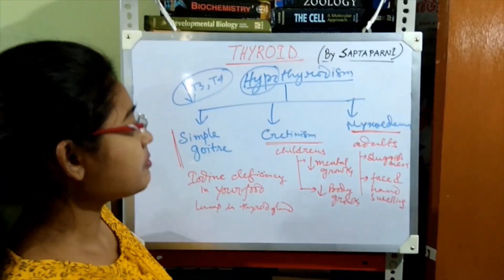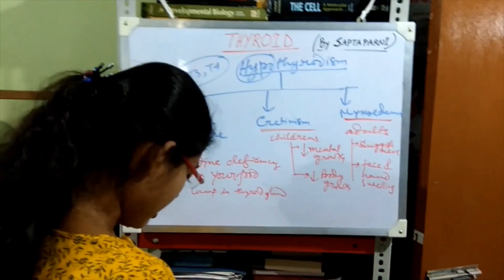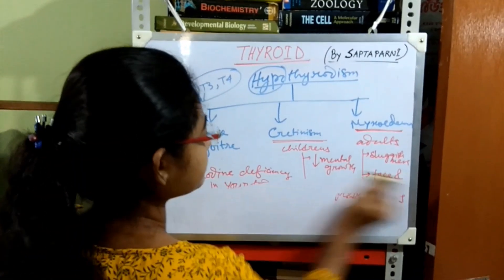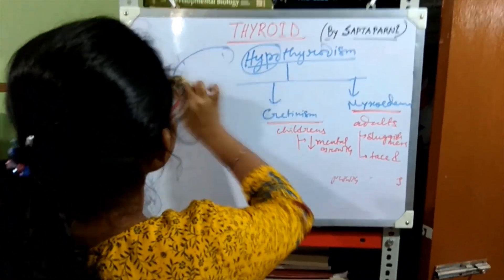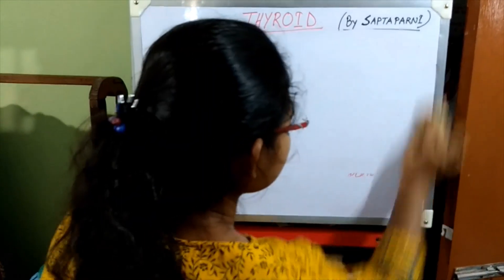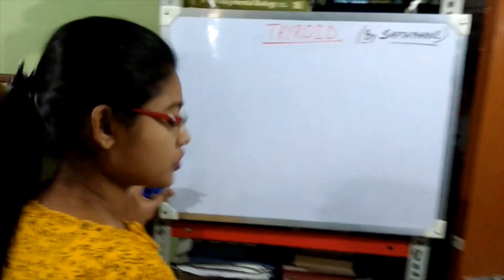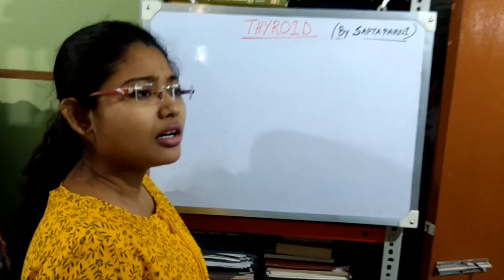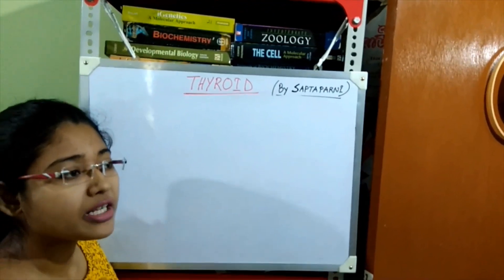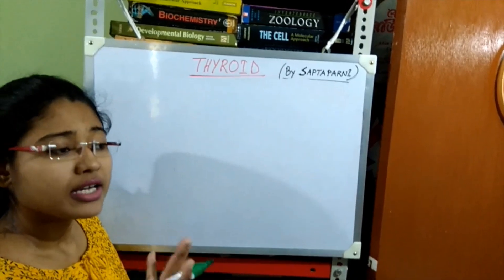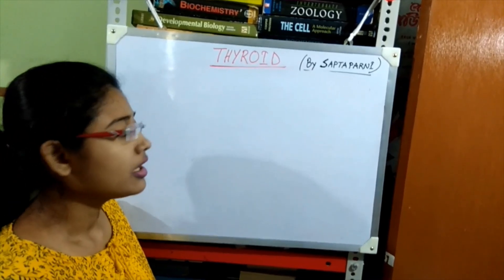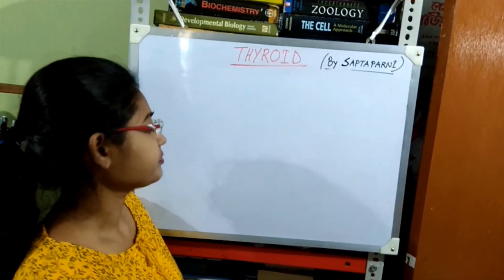These are the symptoms of hypothyroidism. Now, since iodine is the main component of thyroid hormone, and people in hilly regions lack iodine in their food, the preventive measure is to eat iodized salt and iodized food in your diet. That is how you can prevent simple goiter.